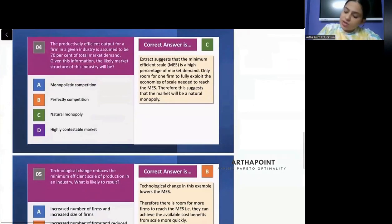Read the next question. The production of efficient output for a firm in a given industry is assumed to be 70% of the total market. Given this information, the market structure of the industry will be. Try to read it.